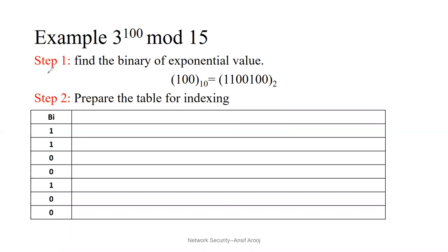Let's start with the solution of this algorithm. Step one is that we need to find the binary of the exponent value. Whatever the exponent value is — any value — you will convert it to binary. So if you convert to binary, you will have that binary representation. In step one, whatever the exponent value is, you convert it to binary.